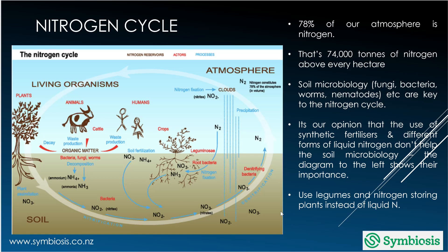Our whole focus is around making sure we don't use liquid N, and instead we use plants — legumes, veg, peas, beans, and nitrogen-fixing things like radish and clovers — that actually allow us to provide nitrogen to the soil profile.